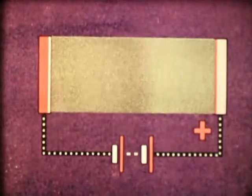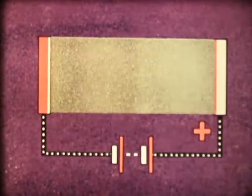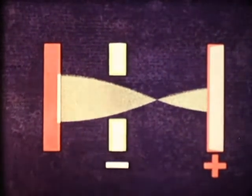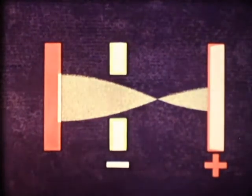Thus, the cathode produces a continuous flow of electrons. Positioned between the cathode and anode is a Wehnelt cylinder, which enables the flow of electrons to be controlled. When the negative charge applied to the Wehnelt cylinder is increased, the cathode will emit fewer electrons.